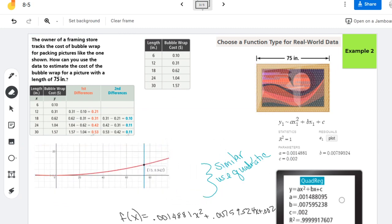There we go, that looks a little better. And so you can see from my Desmos graph that the cost of one picture would be about $8.94 for the 75 inch picture.